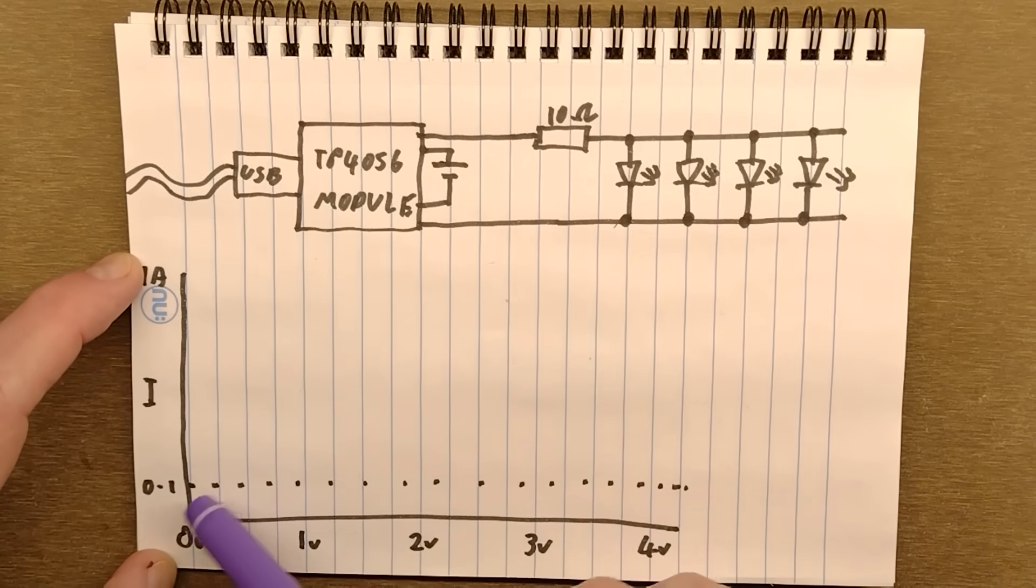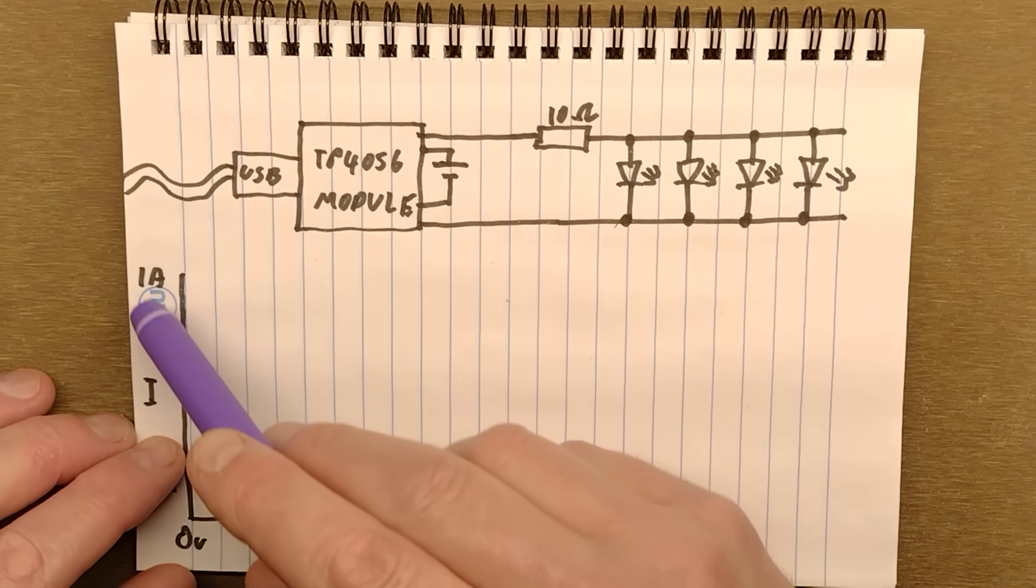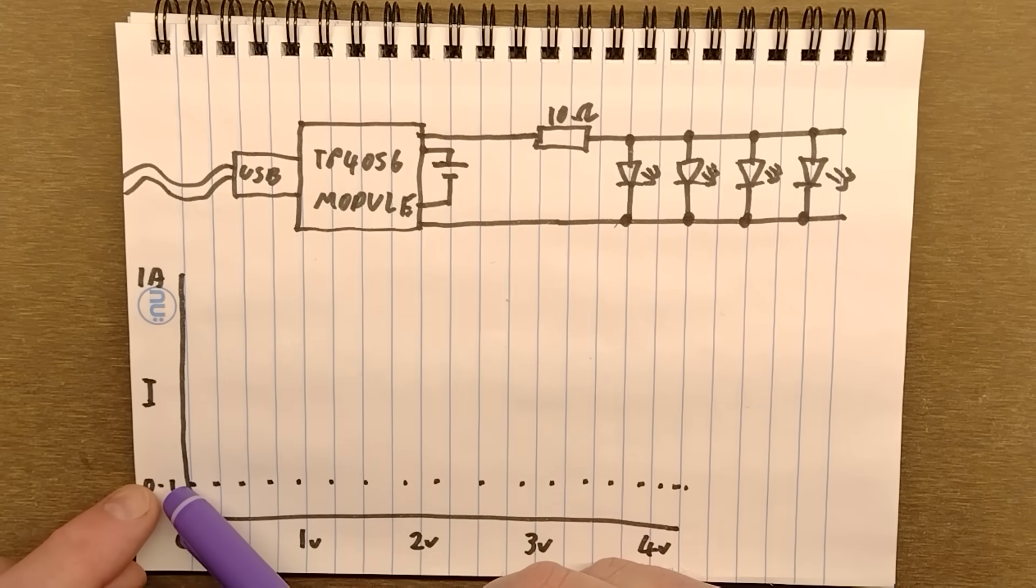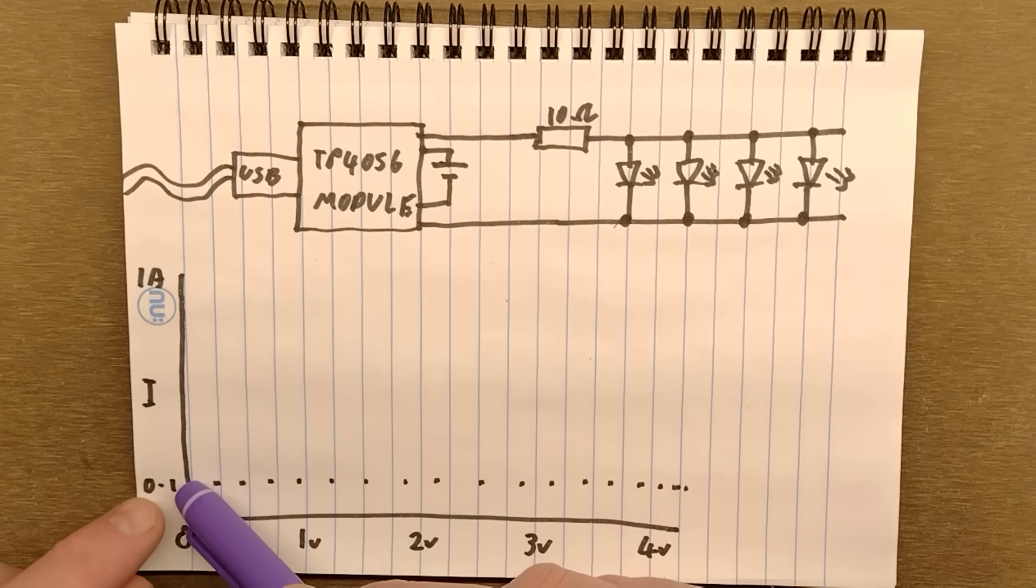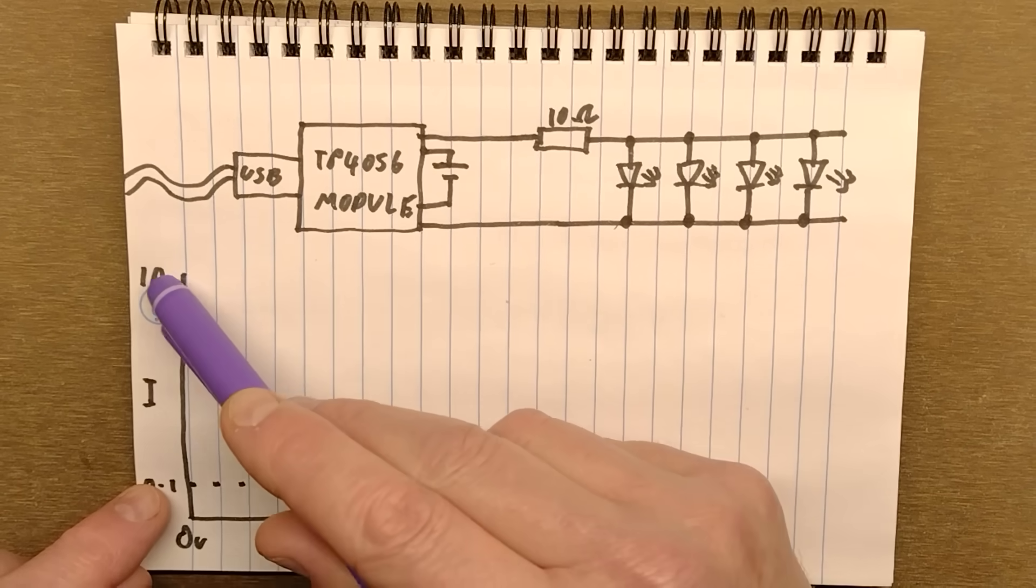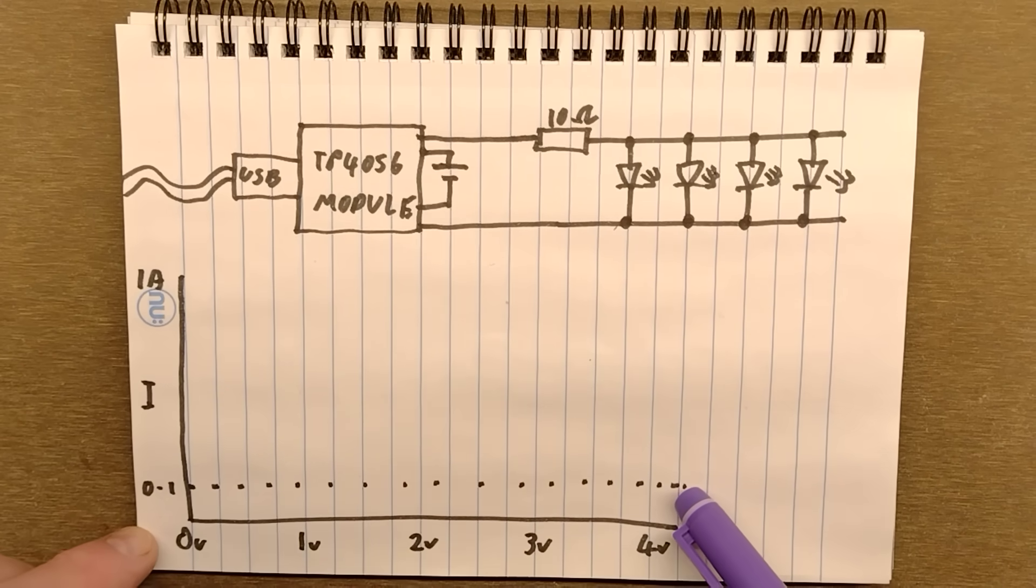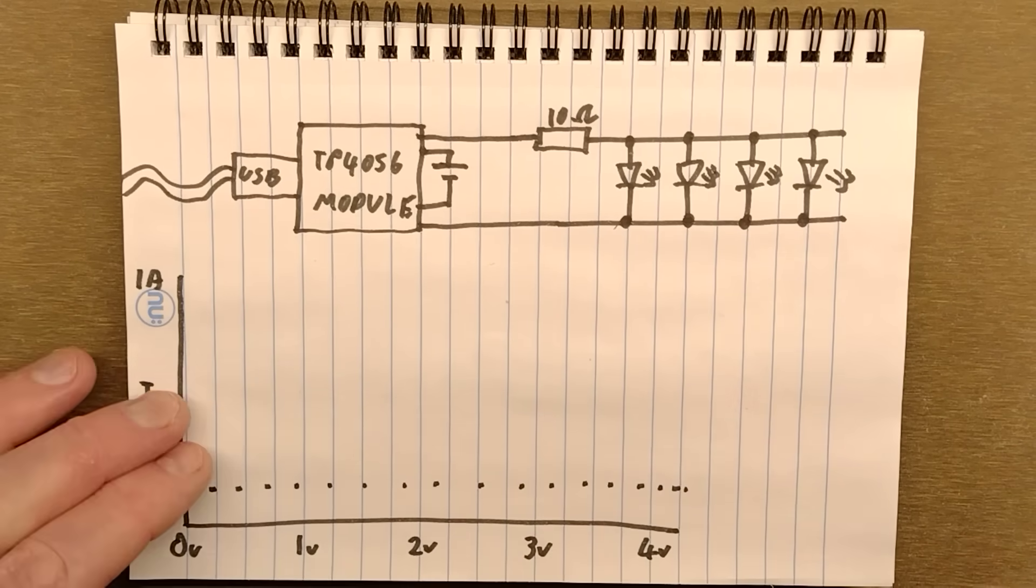When you set with that resistor the one amp threshold, you're also setting a threshold one-tenth of that. So it's 100 milliamps. If you'd set that to 500 milliamps, this would have been 50 milliamps. But in this case, it's a 100 milliamp threshold and it's used at two stages in the charging. It's a very clever chip.